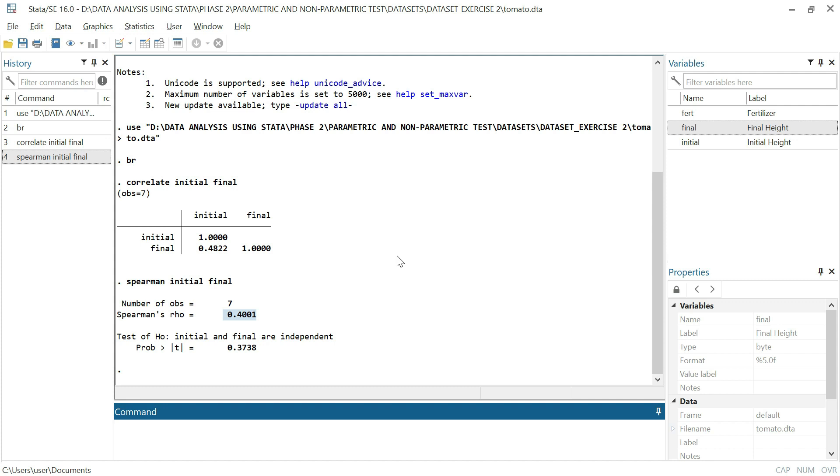We have the correlation result, which is 0.4001, which is not close to 1, indicates a weak positive correlation, which shows that the relationship is not significant. And we have the p-value, which is giving us sustainability on the correlation result, showing that it's greater than 0.05. And we fail to reject the null hypothesis.